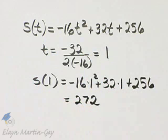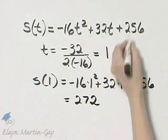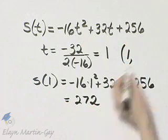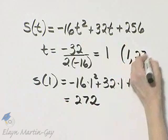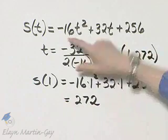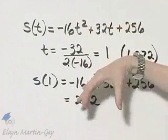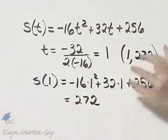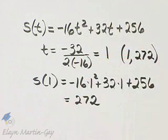Now what does this vertex represent? In other words, this graph has a vertex with coordinates 1, 272. Notice if we graph, this parabola faces or opens downward, so the vertex represents the top or highest point, and that's how we find the maximum.